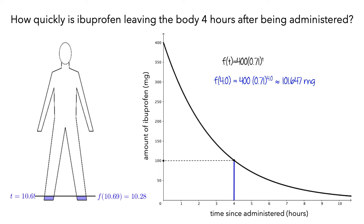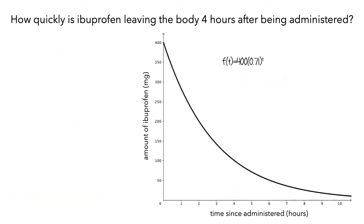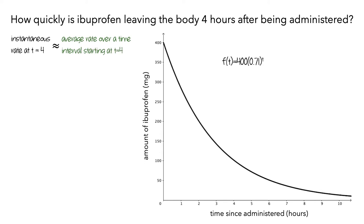Next, we need to try to approximate the instantaneous rate at t equals 4 by computing an average rate over a time interval starting at t equals 4 hours. In this scenario, the average rate is a change in the amount of ibuprofen per a change in time.